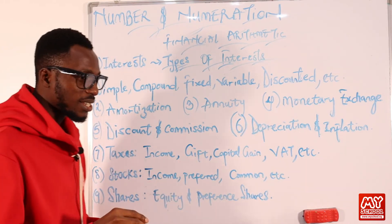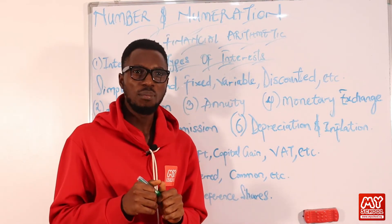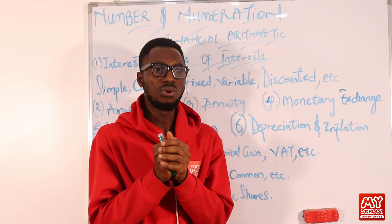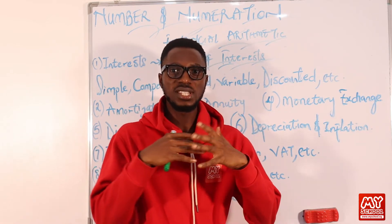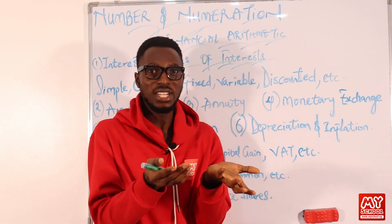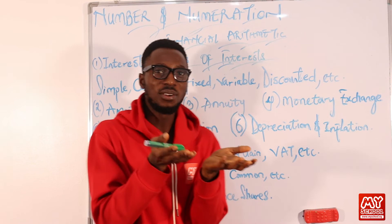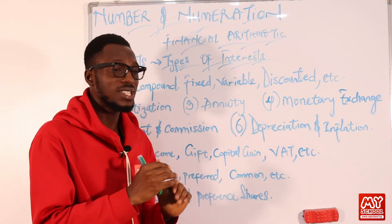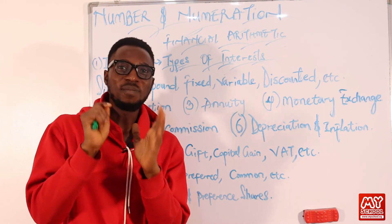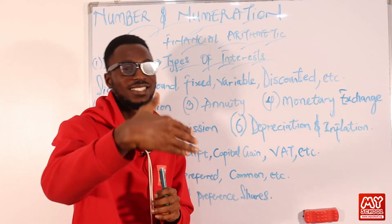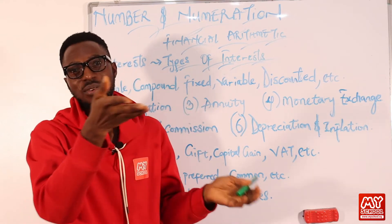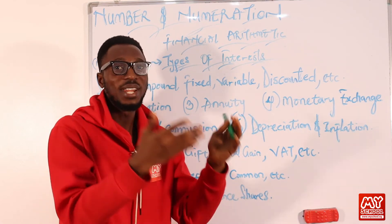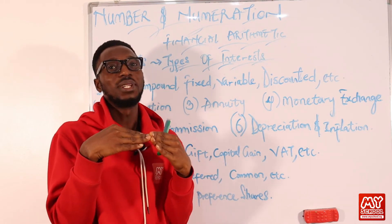We move to stocks. Stocks are a system set up whereby the government or a particular company wants to raise money. Instead of just asking people for money, they sell out or distribute ownership of the company — and those are called shares. Shares are units of ownership. If the amount needed to finance a project is 50k, they break down 50k into several units or shares, expecting people to come and buy. Those who buy become shareholders with a share of ownership of that company.